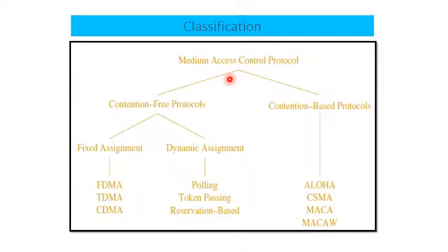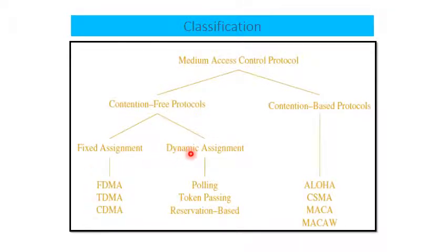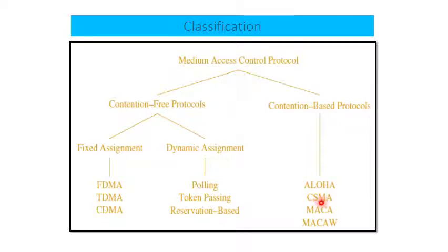This is the broader view of the classification of medium access layer protocols. They are either contention-free or contention-based. Contention-free protocols are mainly preferred for centrally controlled networks where fixed assignment of either frequency, time, or code is done. Dynamic assignment is based on reservation — as and when the user needs a resource, it can demand it and it is given by the central coordinator. In sensor network scenarios where nodes are self-organizing, they normally use protocols like carrier sense multiple access and other multiple MAC layer protocols.